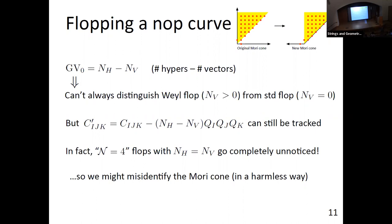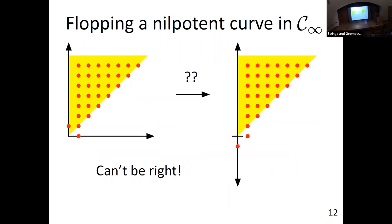Let's think about flopping a knot curve. Here's our original Mori cone. When we change the sign of that mass, we think of it as equivalent to changing the sign of the charge, giving us a new Mori cone for our flopped phase. We can take the span of the non-zero GV invariants and figure out what our Mori cone is, without assuming anything geometrically. For nilpotent curves on the boundary of the infinity cone, if you naively try to flop them, you get a non-convex Mori cone, which can't be right — so something different has to happen.